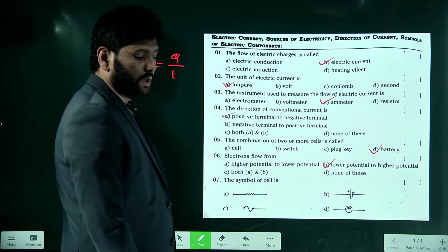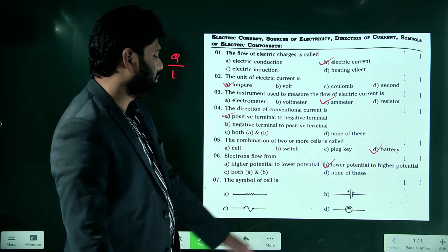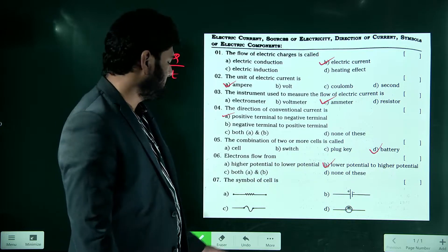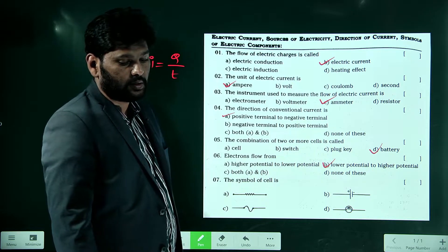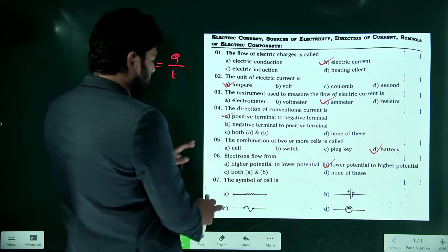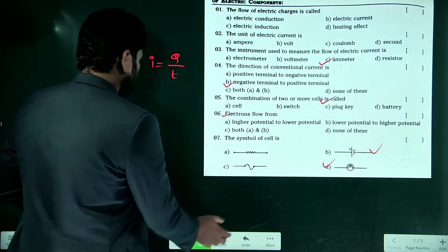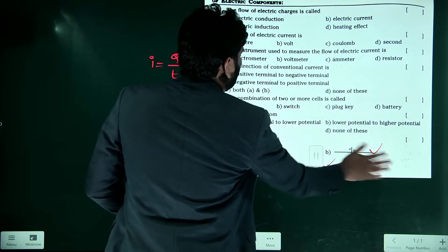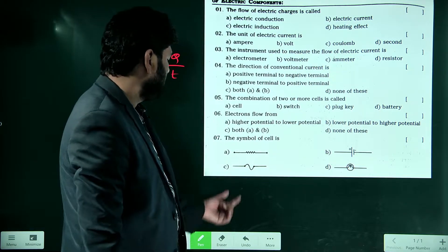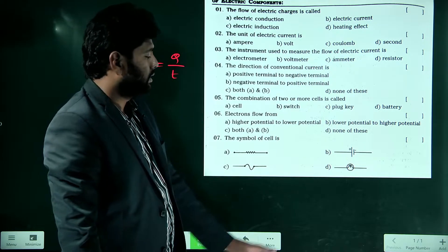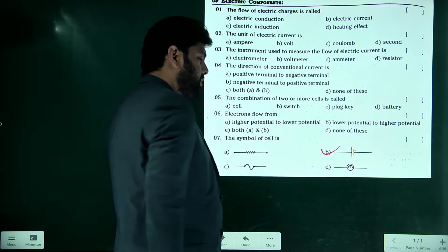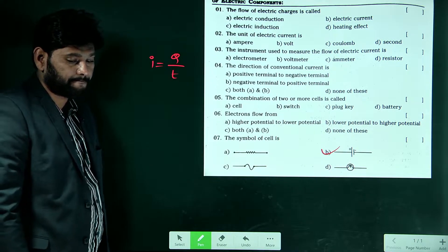The symbol for a cell: observe the symbols. Option D represents the bulb symbol, option C represents the fuse symbol. Option A represents the resistor, option C represents the fuse, and option D represents the bulb. The question asks about the cell, so the cell symbol is option B.